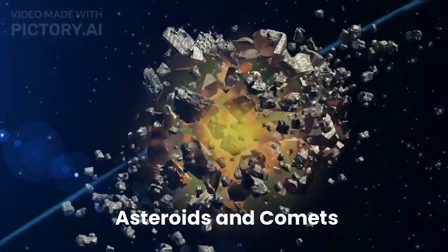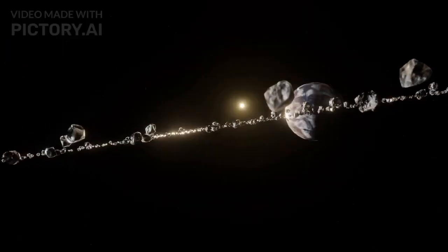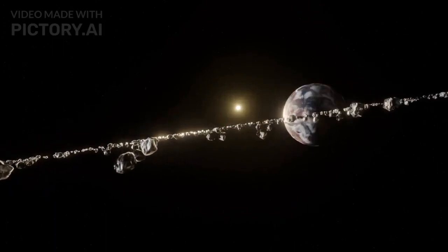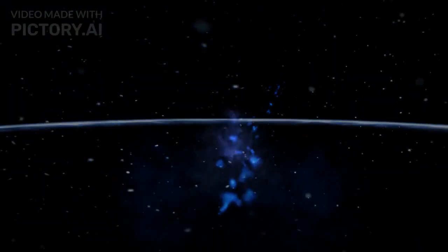Next we have asteroids and comets, remnants of the early solar system. Asteroids are rocky objects that orbit the sun, primarily found in the asteroid belt between Mars and Jupiter. Comets are icy bodies that develop tails when they approach the sun due to the sublimation of their ices. Some comets originate from the Oort cloud, a distant region surrounding the solar system.